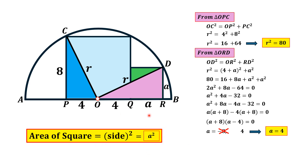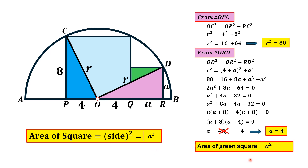The area of the green square equals A², which is 4² = 16 square units. That is the answer. If you are new to my channel, please subscribe and give a thumbs up to the video. Thank you for watching.